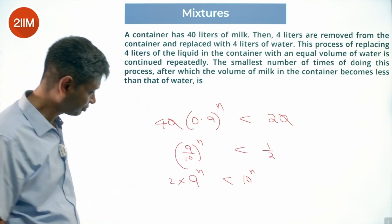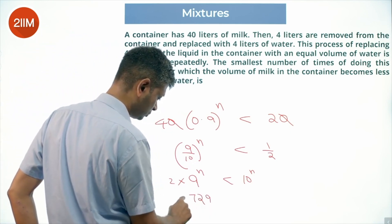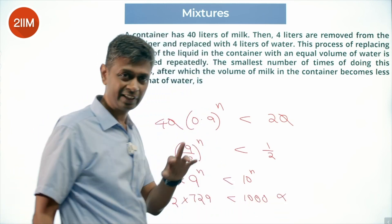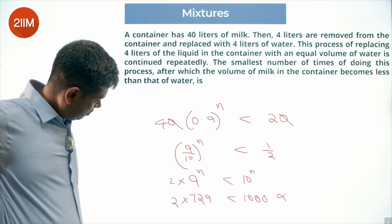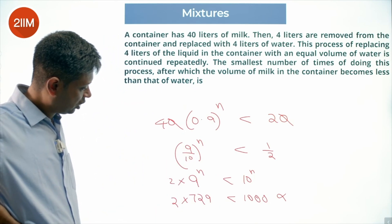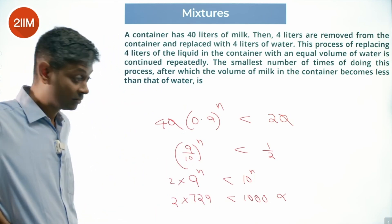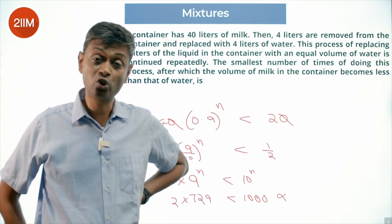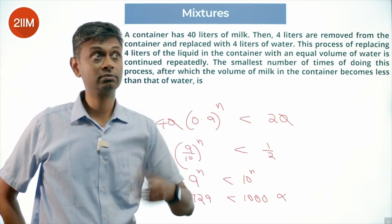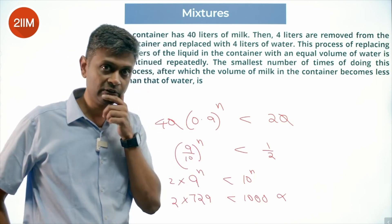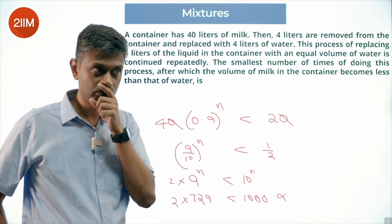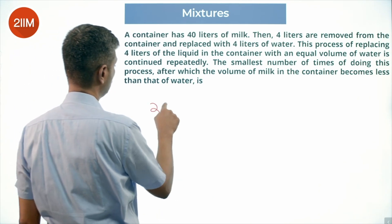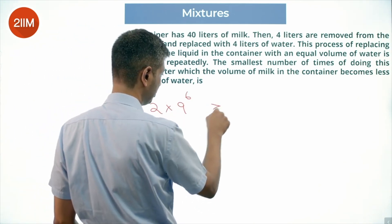9 cubed is 729. It is less than 1000, so it doesn't work — 3 times doesn't work. I can think of it as 0.729 compared with 1 — definitely it doesn't work. I can square this also: 729 squared. My gut feel is that 2 × 9^6 will be greater than 10^6.